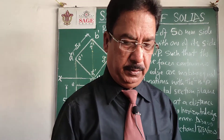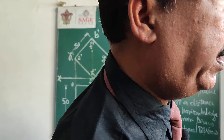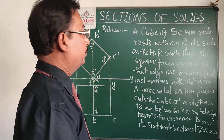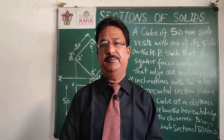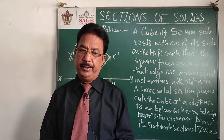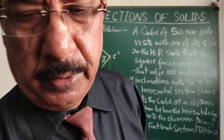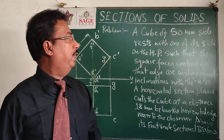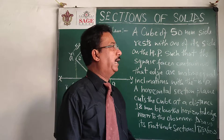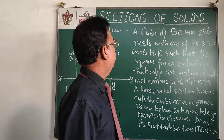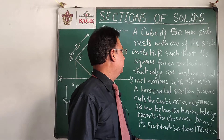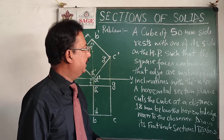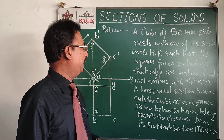Hello students, today I am here again with another problem on sections of solids. This time it will be a problem of a cube. The problem states: a cube of 50 mm side rests with one of its sides on the HP, such that the square faces containing that edge are making equal inclinations with the HP.